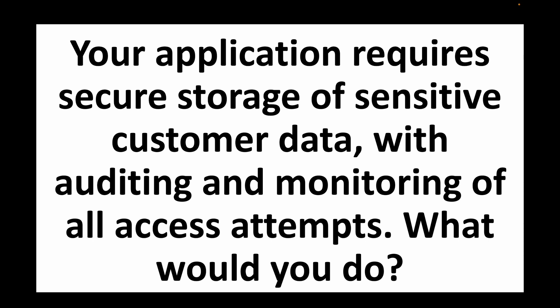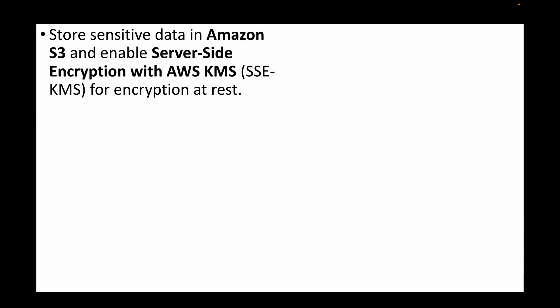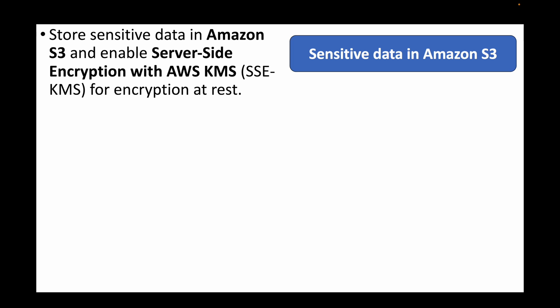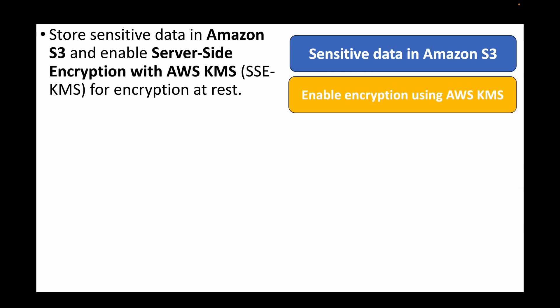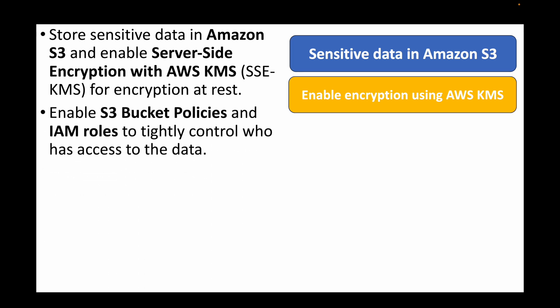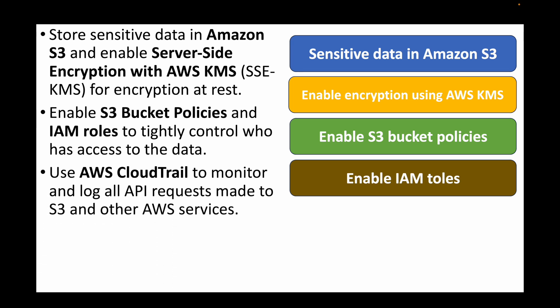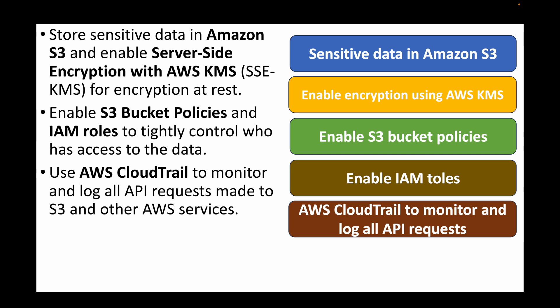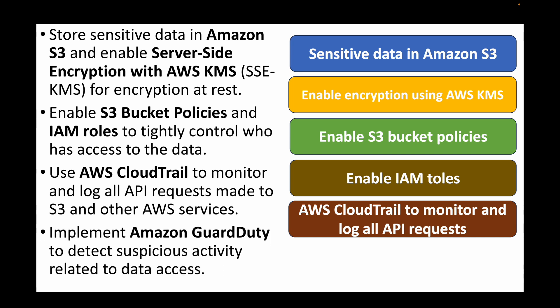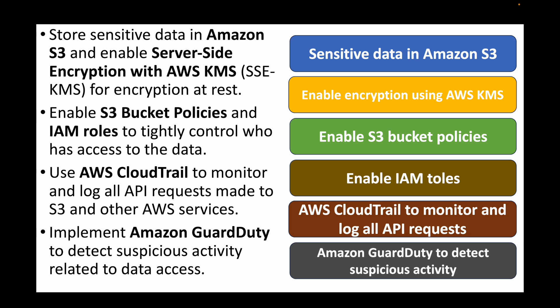The next question is: your application requires secure storage of sensitive customer data with auditing and monitoring of all access attempts — what would you do? We store data in S3 with server-side encryption using KMS (Key Management Service) for data at rest. We enable S3 bucket policies and IAM rules with least privilege to tightly control access. CloudTrail is used to monitor all API requests to S3 and other AWS services, and Amazon GuardDuty is implemented to detect any suspicious activity related to data access.